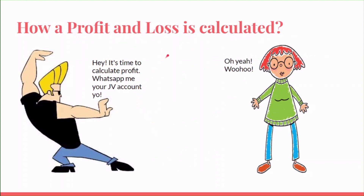Moving to how we can calculate profit or loss — as we discussed, they don't know anything about what's happening on the other side. So they will decide to share information. Johnny will say, 'Hey Pinky, can you WhatsApp me your JV account? I want to calculate profit.' Since there may be a profit, and maybe she owes some money to Johnny or vice versa, they need to make a combined account. So they need to share information.